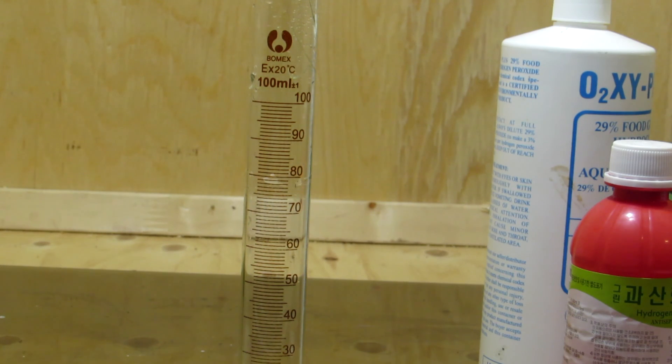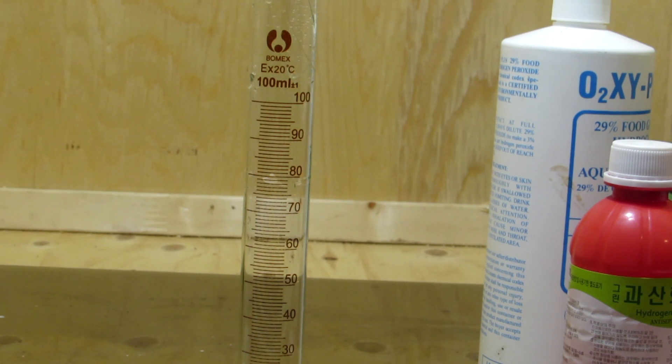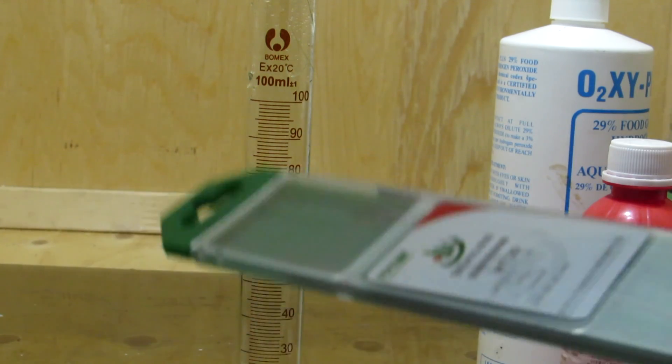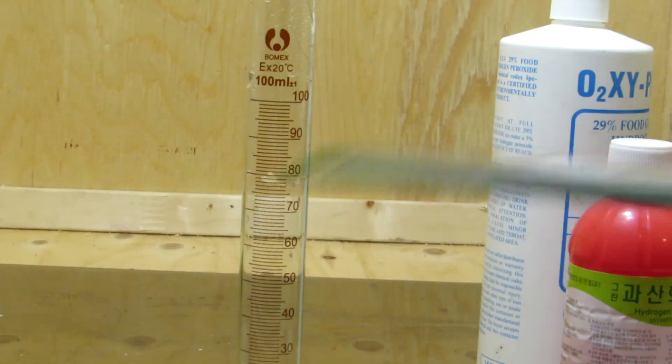Thorium dioxide used to be used in gas mantles, however due to its radioactivity, nowadays cerium and lanthanum oxides are used instead. Thorium dioxide is still used in thorated tungsten welding electrodes however, so I headed onto eBay and bought 10 rods for $8.